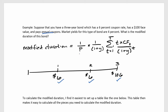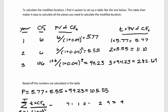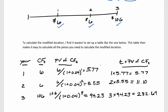To calculate the modified duration of this bond we need to calculate the price and this key quantity in the formula. I like to tackle these kinds of problems using a table — I think it organizes the calculations well. The table I like to set up has a column for the year.